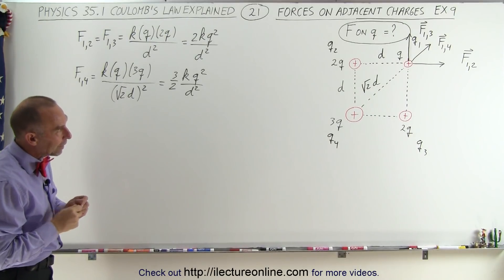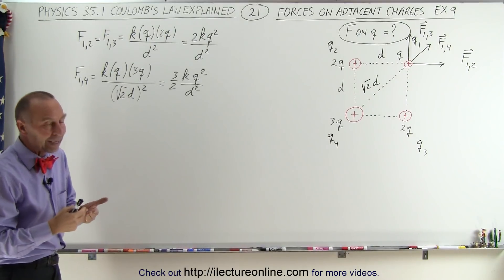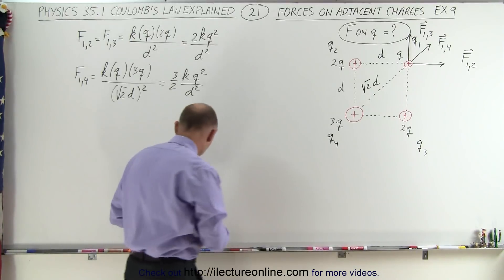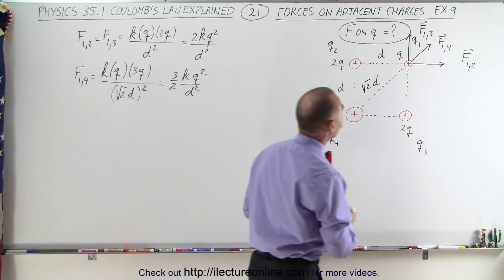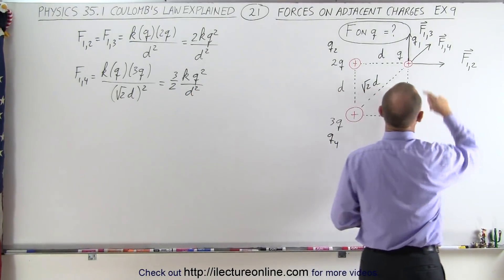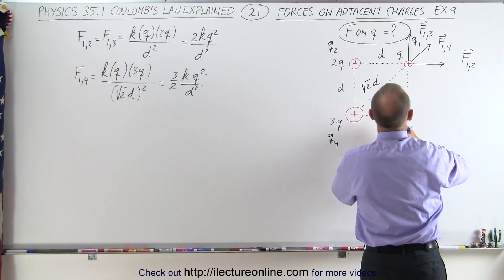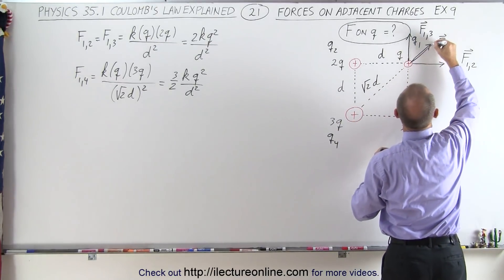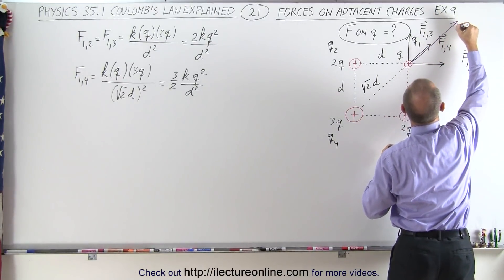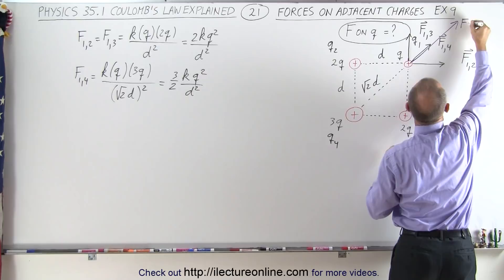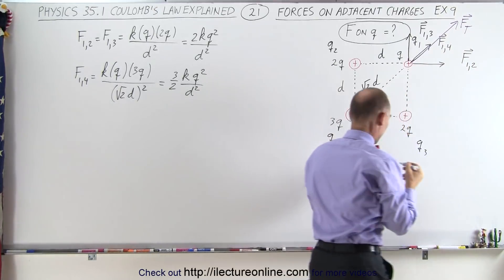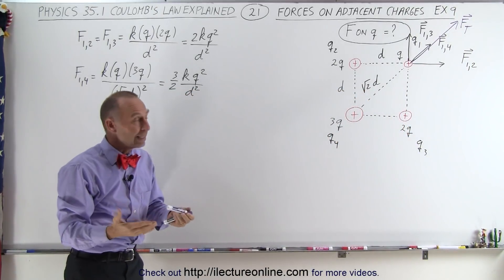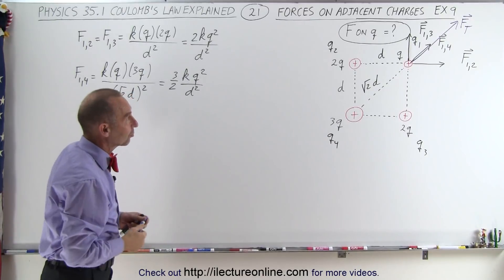Now what do we need to do in order to find the final total force? When we add these two together plus this one, we end up with something that probably looks like this — this will be the total force. We find that by adding the vectors together.